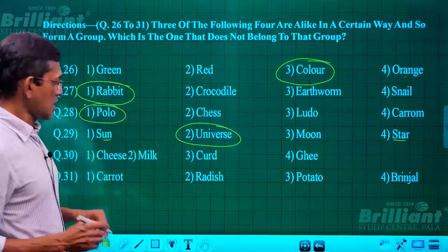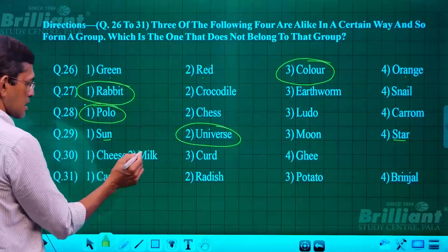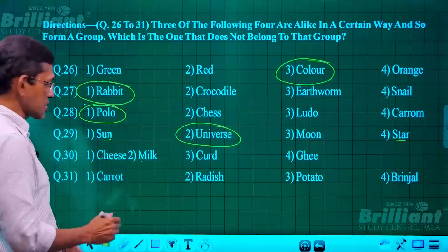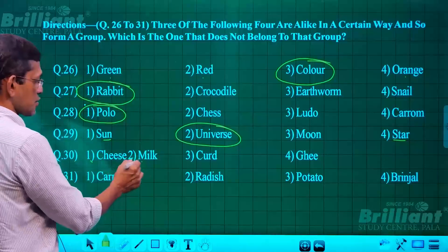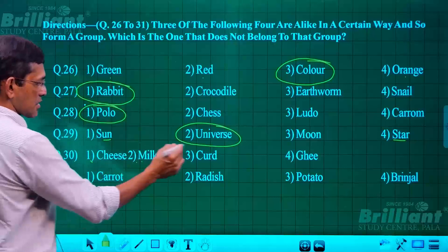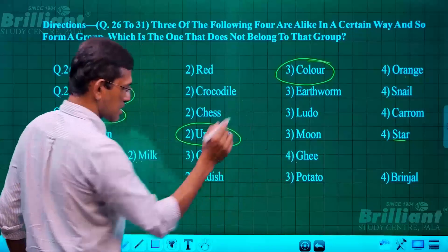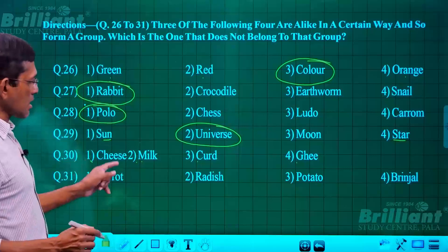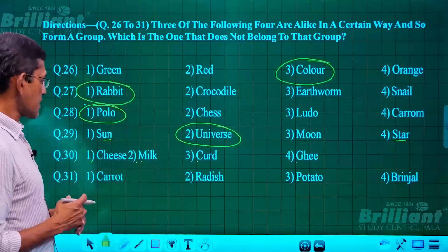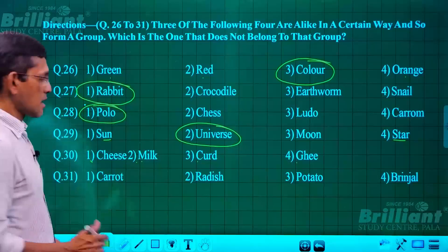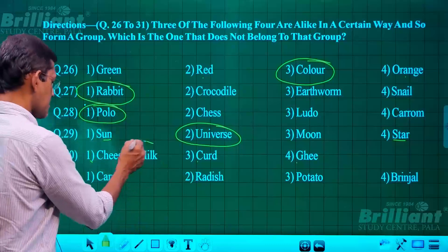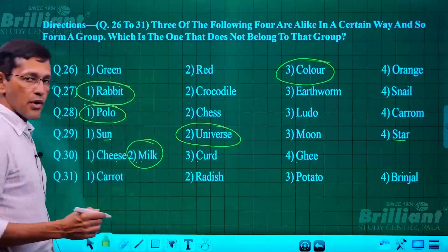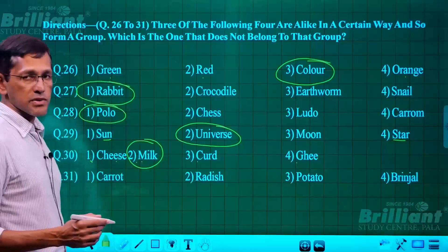Question 30: cheese, milk, curd, and ghee. Which one is different from the group? Definitely it is milk, because cheese, curd, and ghee are all byproducts of milk. So milk is the odd one out.